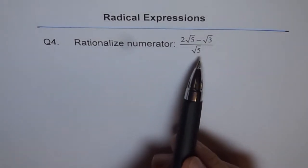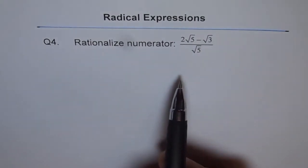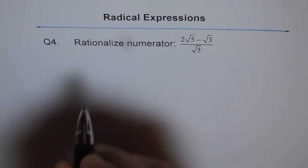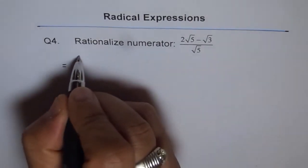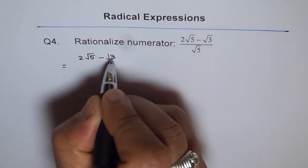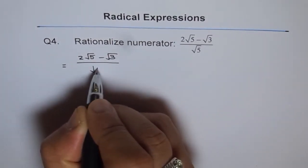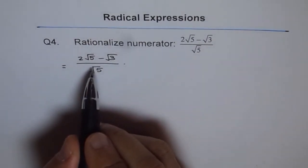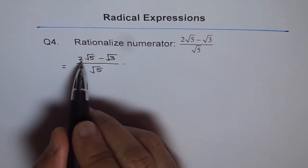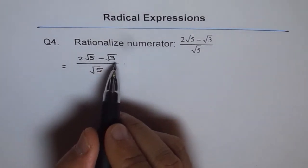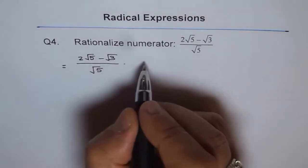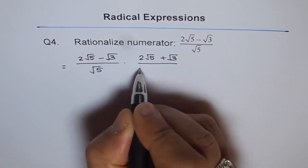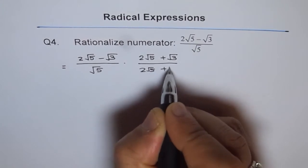To rationalize, we will multiply and divide by the conjugate of the numerator. The conjugate of the numerator 2 square root 5 minus square root 3 will be 2 square root 5 plus square root 3. So we multiply and divide by 2 square root 5 plus square root 3.